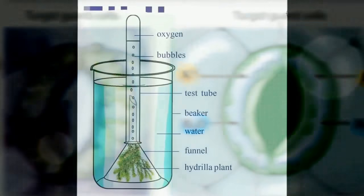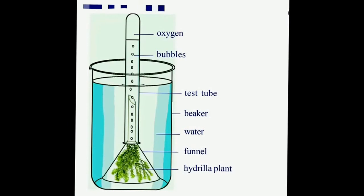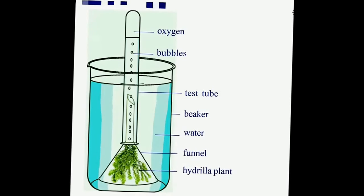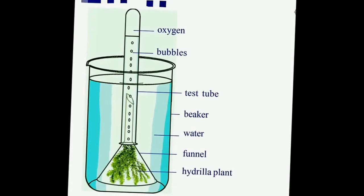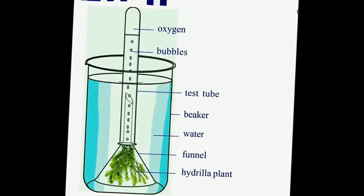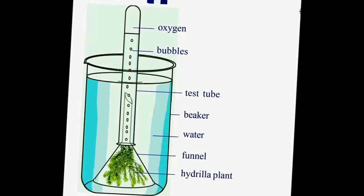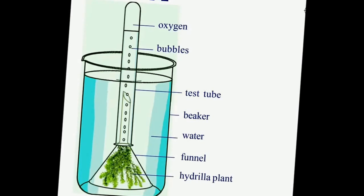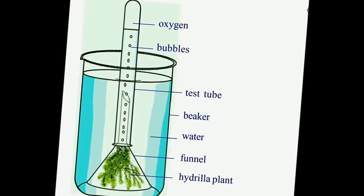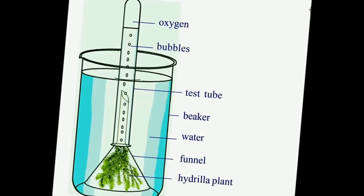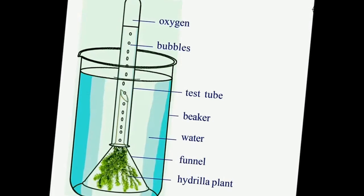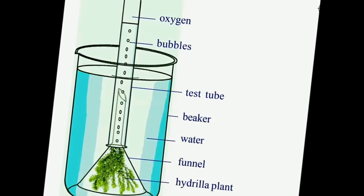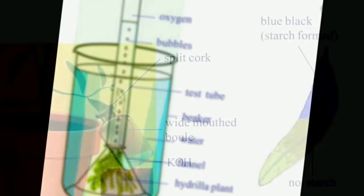We are observing now is an experiment to prove that oxygen liberates during photosynthesis is namely hydrilla funnel experiment. In this, hydrilla or elodea plants can be used. Oxygen can be observed as bubbles that can be proved with the burning matchstick. Here, only we have to use water plants.